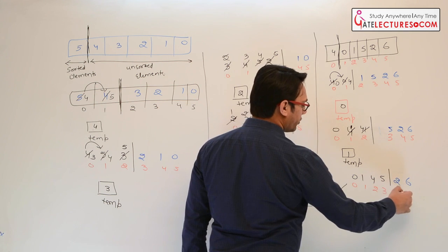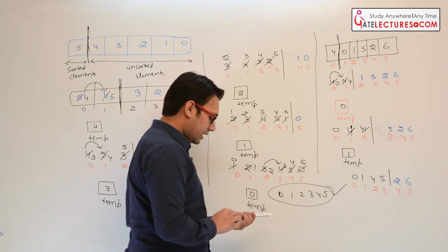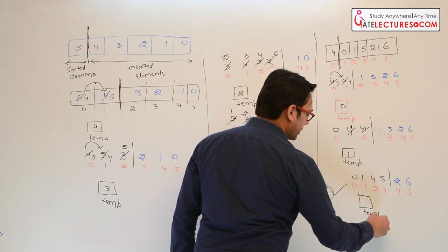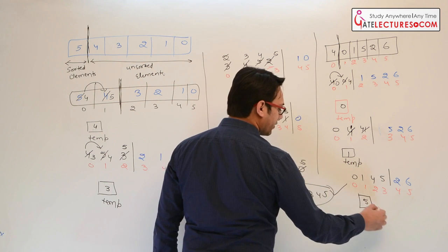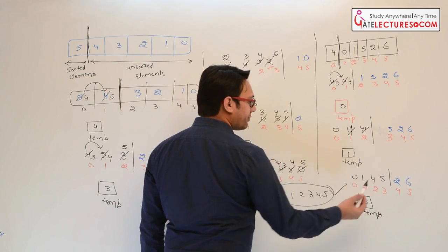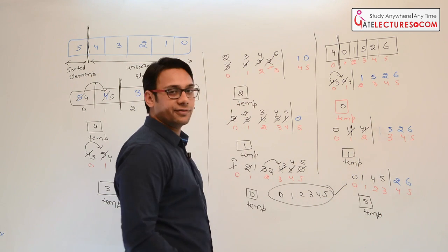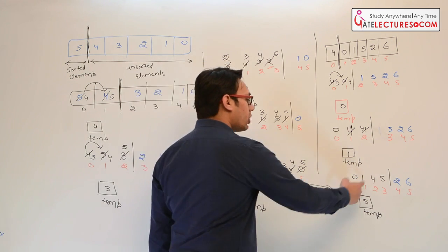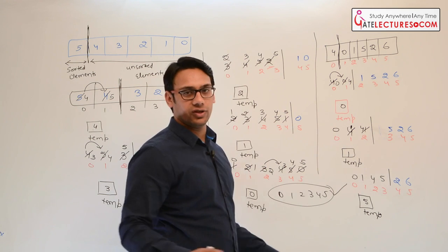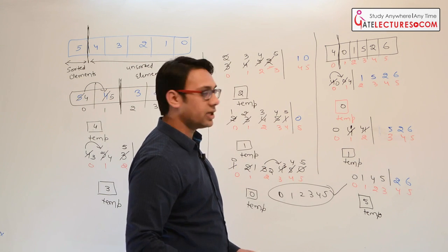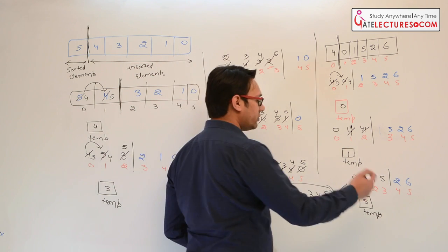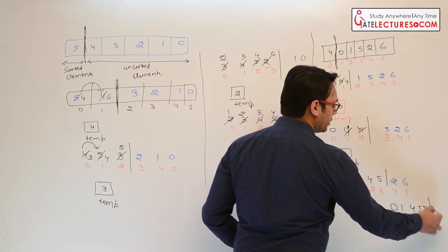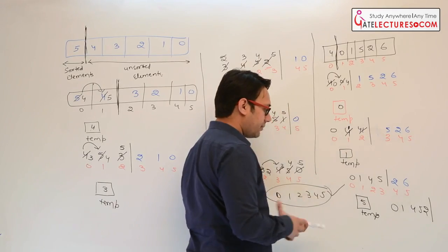Take the next element, which is 5. The temporary variable stores 5. Compare 4 and 5 — 4 is already less than 5, so there is no swap needed. Shoot the window again. Elements are now 0, 1, 4, 5, 2, and 6. Index locations are 0 to 5. Store 2 in the temporary variable.